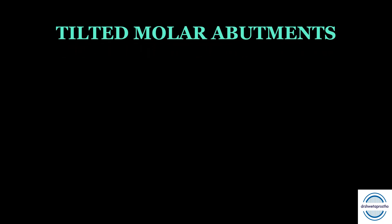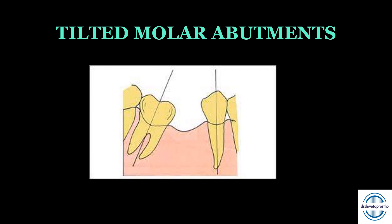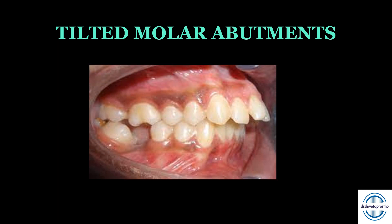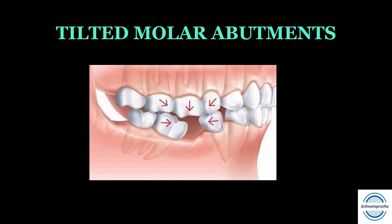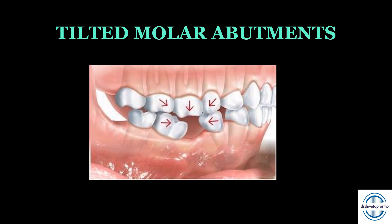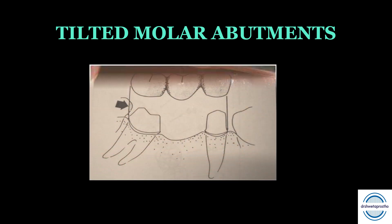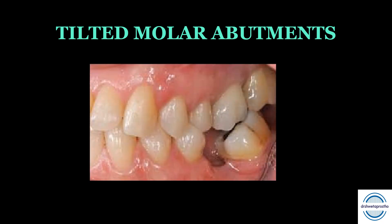Tilted molar abutments — let us discuss these in detail. When the loss of a permanent mandibular first molar occurs — caries being the most common reason for extraction — if this edentulous space is ignored, the second molar will tilt mesially, and with the eruption of the third molar, the opposing first molar may also supra-erupt. This makes it very difficult or impossible to make a satisfactory fixed prosthesis, as we cannot achieve a parallel path of insertion without interferences.